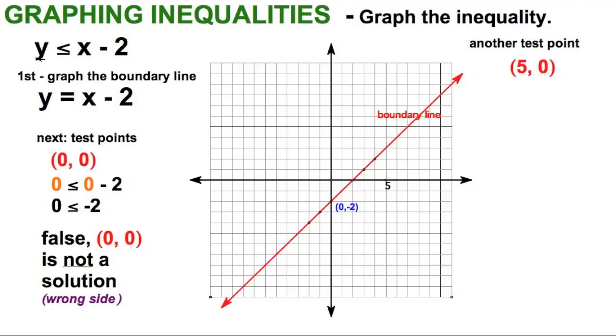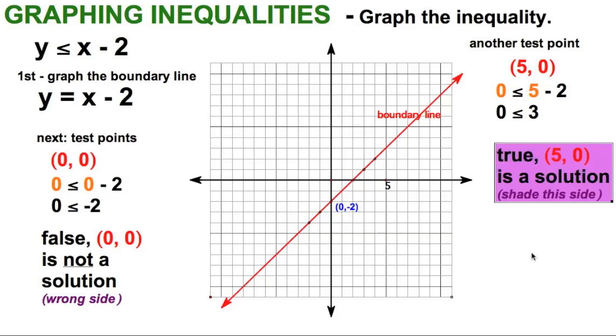Again, back to this inequality. And let's do the substitution. And there it is. Remember, the 5 is the x, the 0 is the y. 0 is less than or equal to 3. Well, I would have to say that that is true. Therefore, this point is a solution, and this must be the side that contains the solutions.